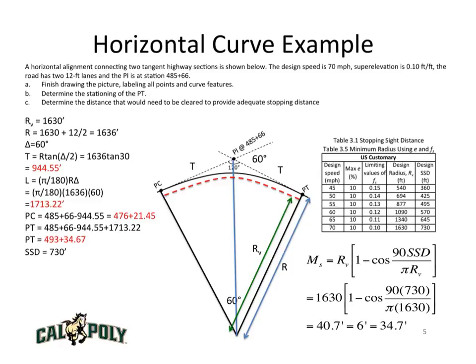The last part of the question is to determine the amount that needs to be cleared. What we want to do is use our equation M sub S. That is equal to R sub V times 1 minus the cosine of 90 times the stopping sight distance divided by pi times RV. In this case, R sub V, as we saw before, is 1630.